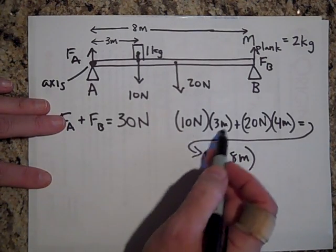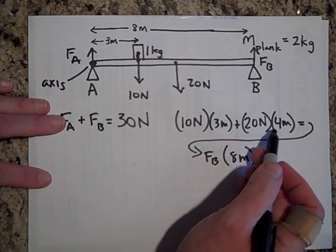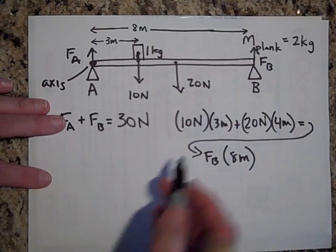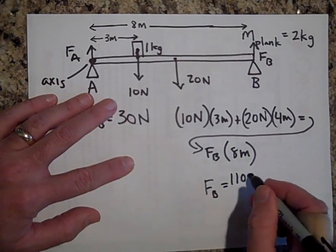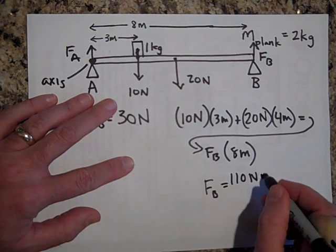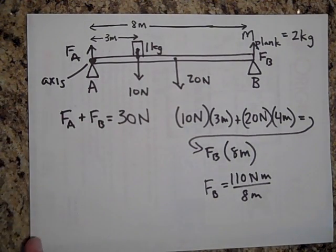Let's see, that's 30 plus 40. That's a hundred and, that's 80 and a hundred. So it's 110. So F_B is 110 newton meters divided by eight meters. So I got that.